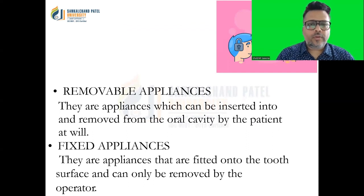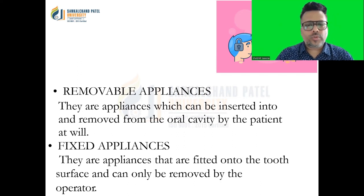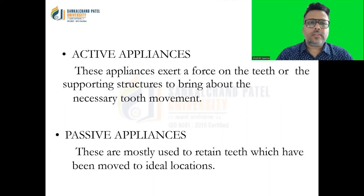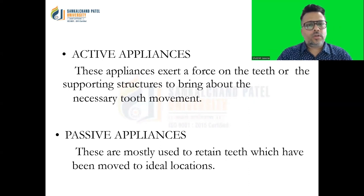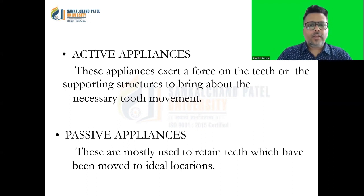Removable appliances are the appliances which can be inserted and removed from the oral cavity by the patient at his or her own will. Fixed appliances are the appliances that are fitted onto the tooth structure and can only be removed by the doctor or the operator. Fixed appliances exert a direct force on the teeth or the supporting structures to bring the necessary tooth movement. Passive appliances do not apply a direct pressure; they are used to retain the teeth which have moved to the ideal locations.